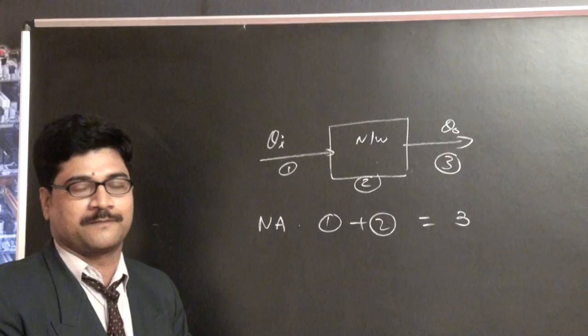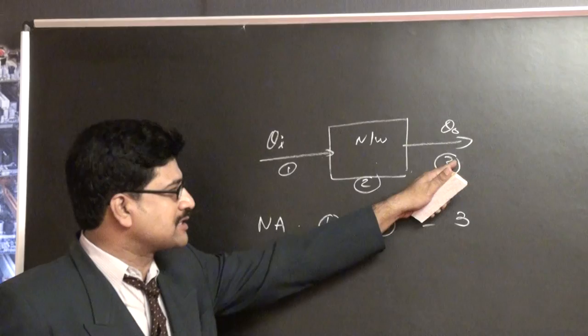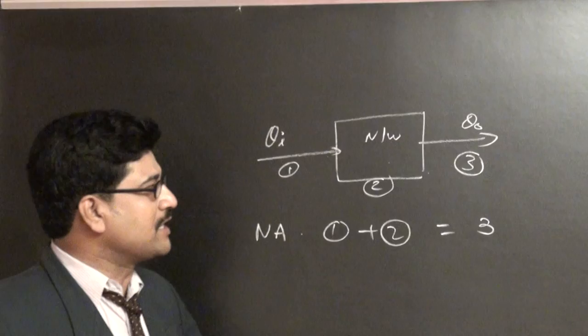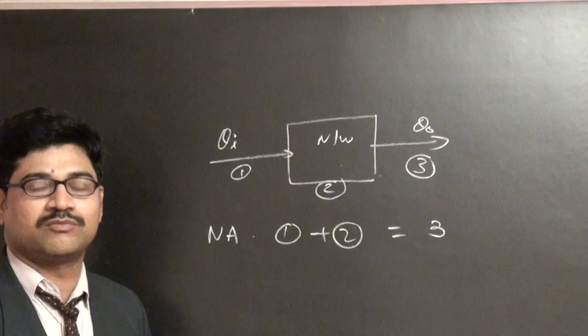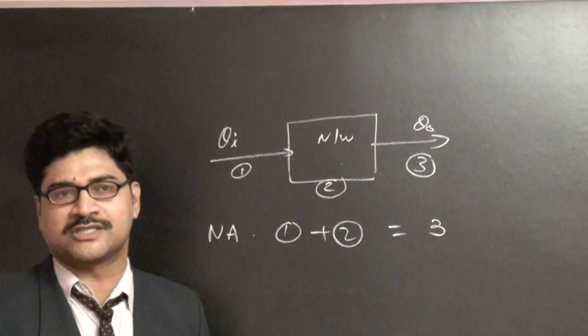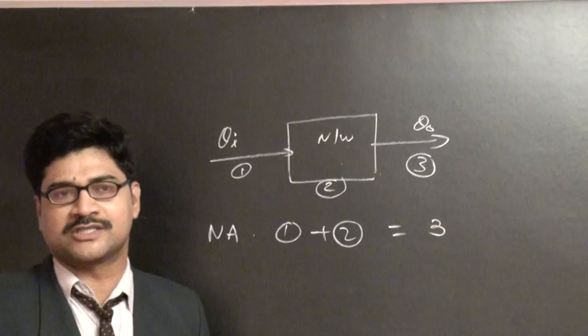The important network elements are resistor, inductor, and capacitor. After studying responses, network elements, and sources, we combine them in different configurations: series, parallel, series-parallel, parallel-series, bridge, or ladder — whatever may be the network connection.